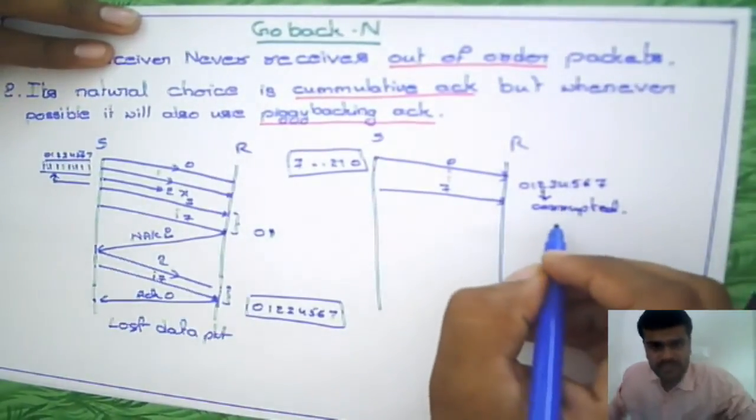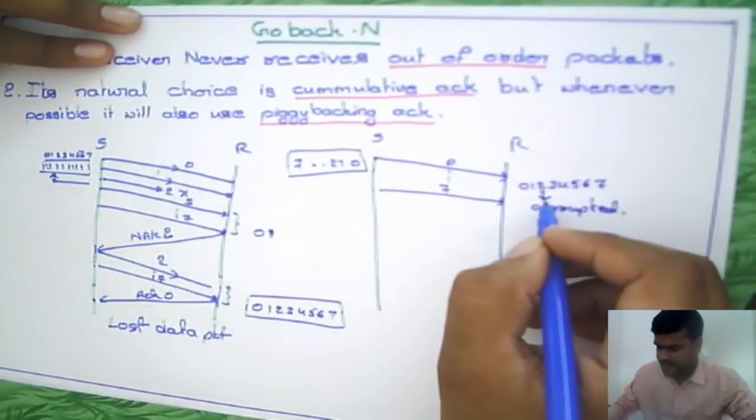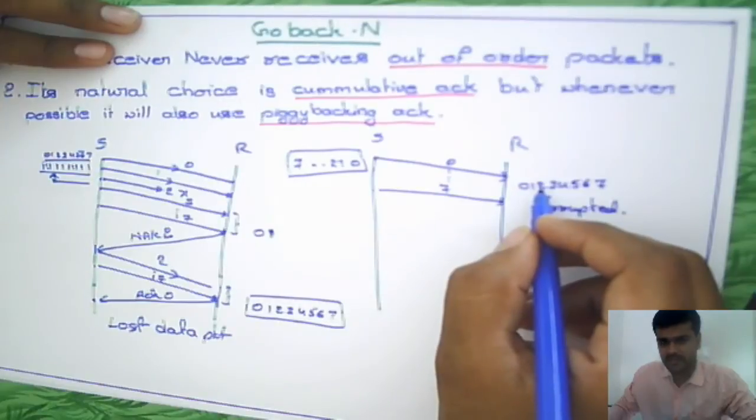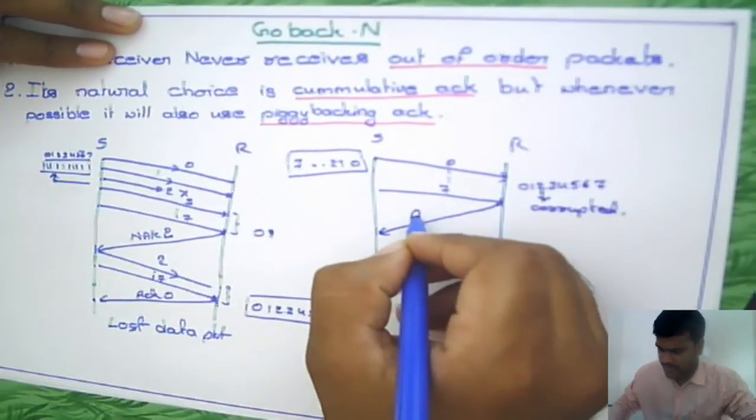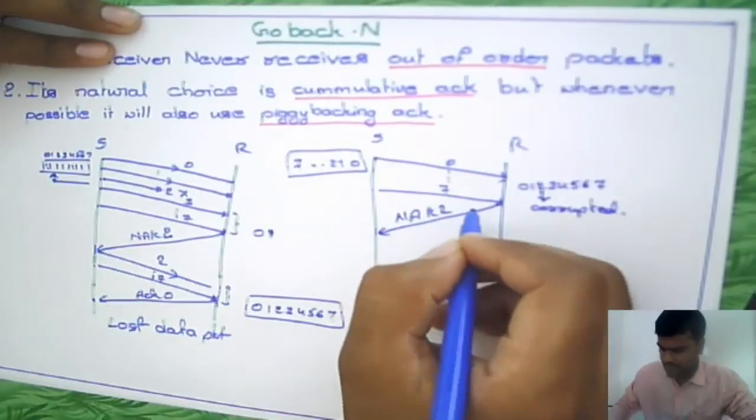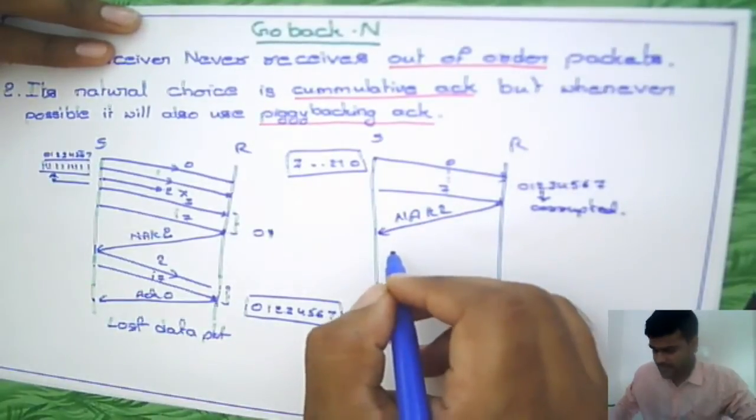By using CRC calculations, the receiver is going to find out that this packet is corrupted, so it is going to give a negative acknowledgement, negative acknowledgement to the sender.